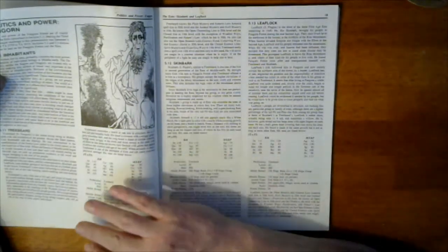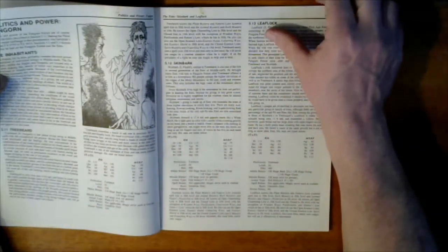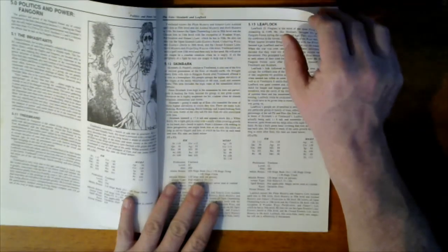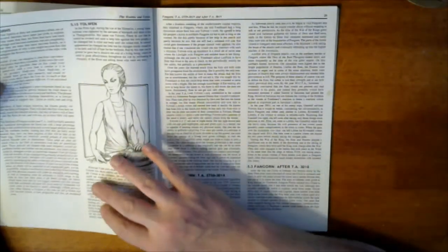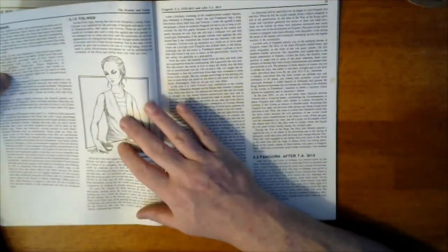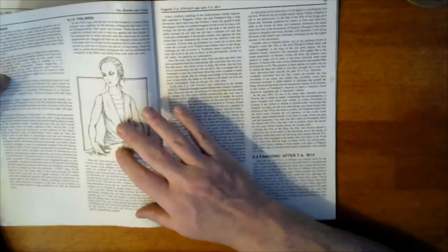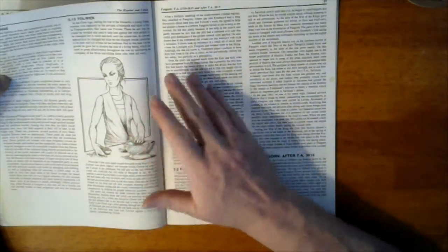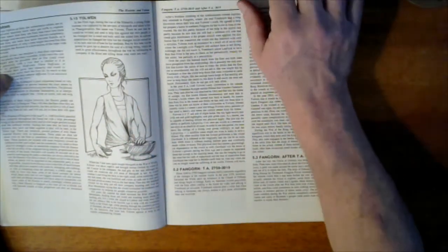Treebeard, Skinbark, Leaflock and their stats. Like I said, it's not overly difficult to convert these over. The Huorns themselves, and then another fictional character, an elf during a certain period of time so that you can potentially have another encounter.